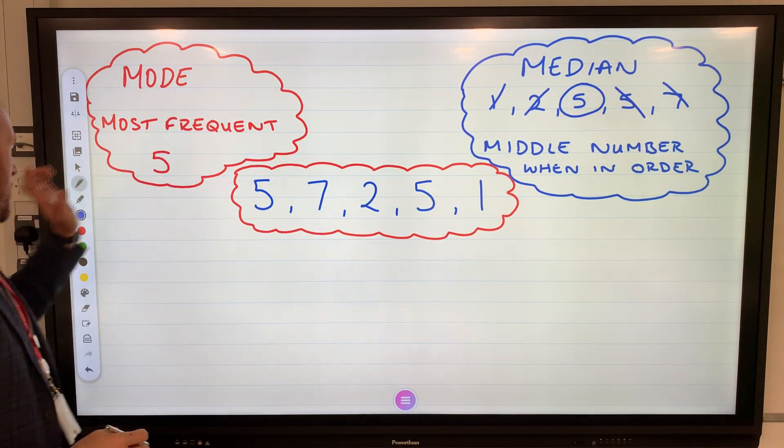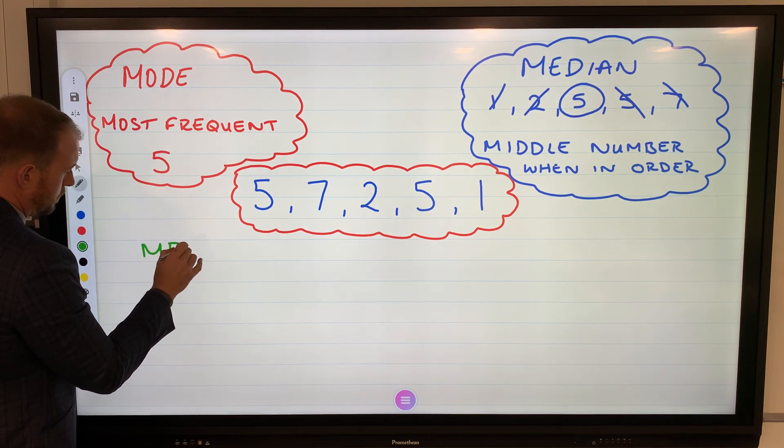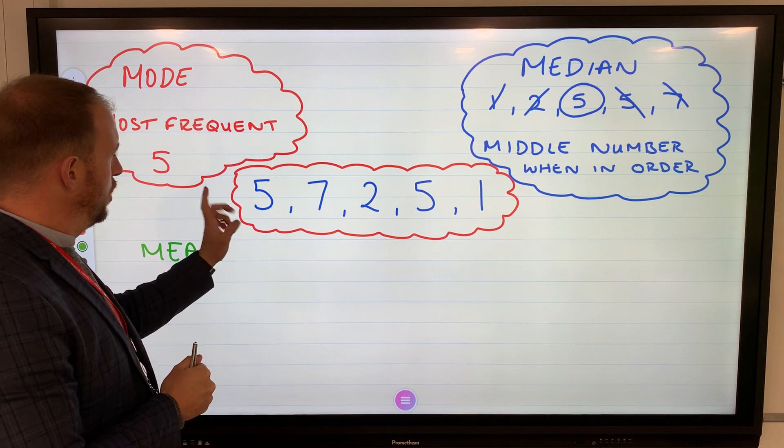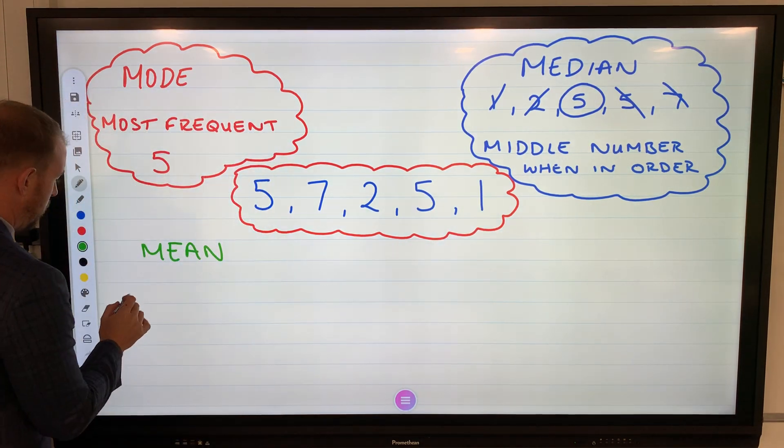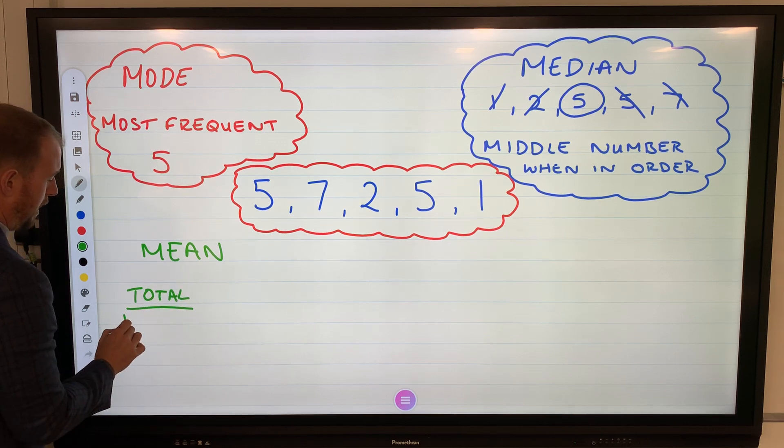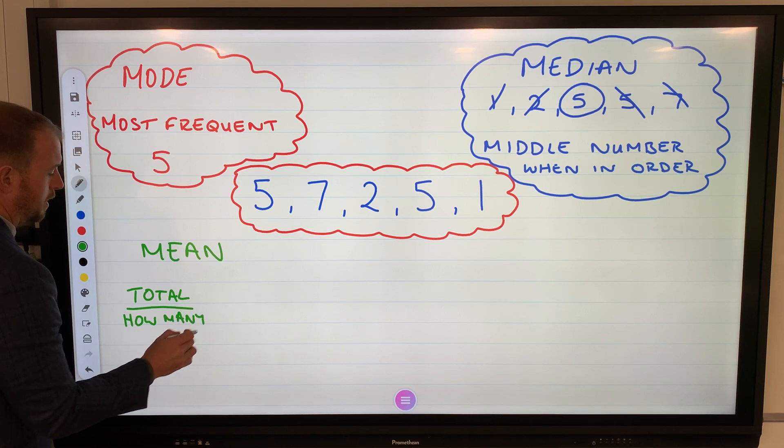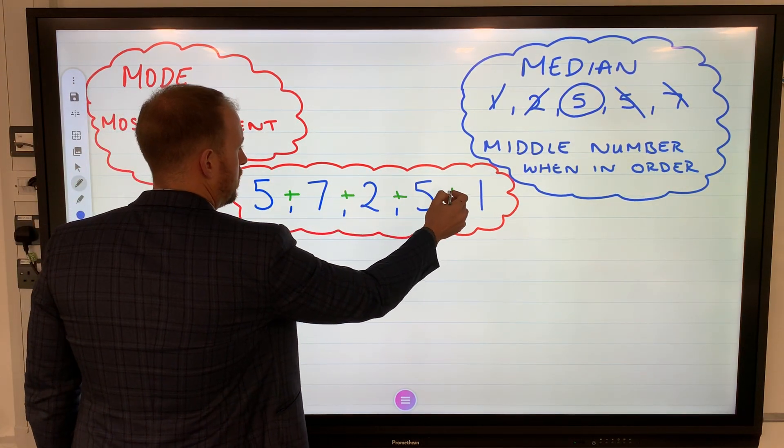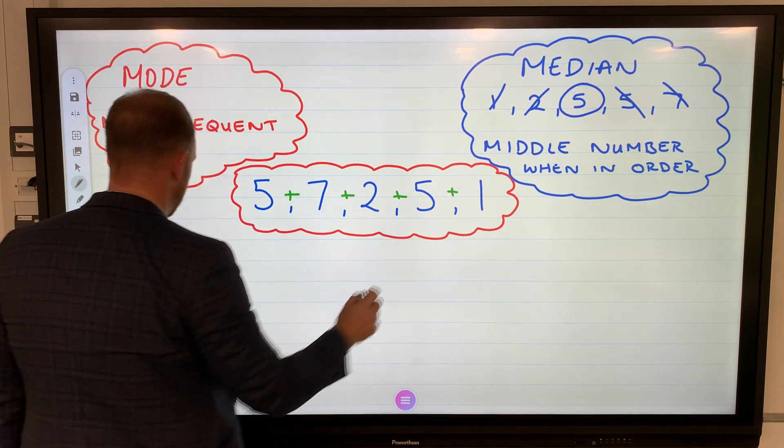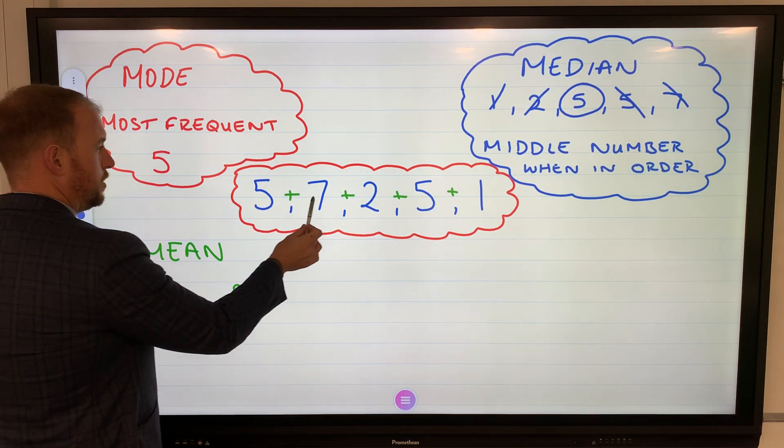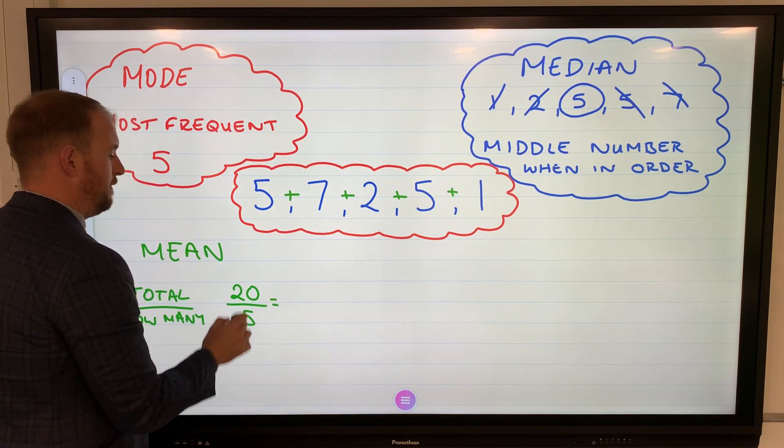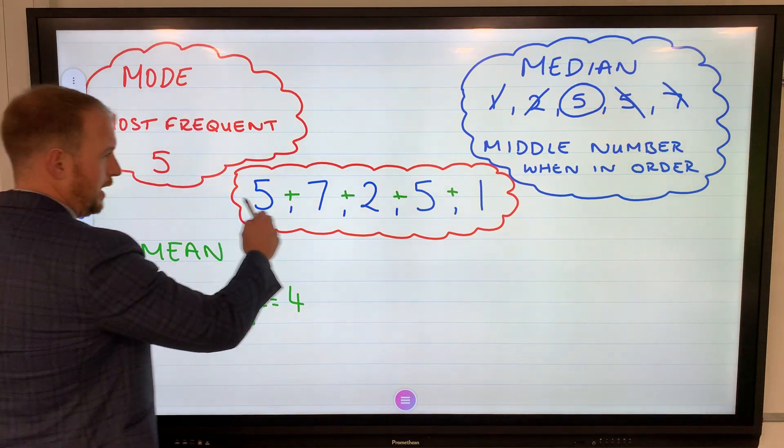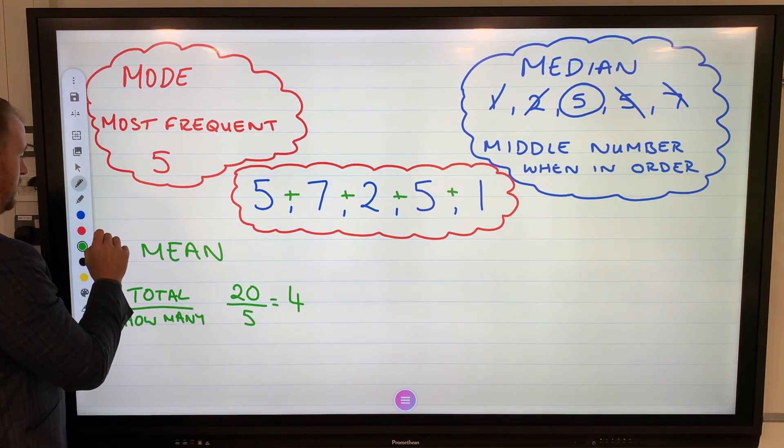Mode, median, mean this time. Now mean is the hardest one - it's mean, it's angry. What we have to do is add them all up, so we need to find the total and then divide that by how many, or frequency. Total divided by how many. To add all of these up: 5, 5, 5, 12, 14, 19, 20. So I've got 20 divided by 1, 2, 3, 4, 5, and 5 into 20 is 4 times. So the mean average would be 4 for this data set. Remember, total divided by the frequency, which is how many there are.